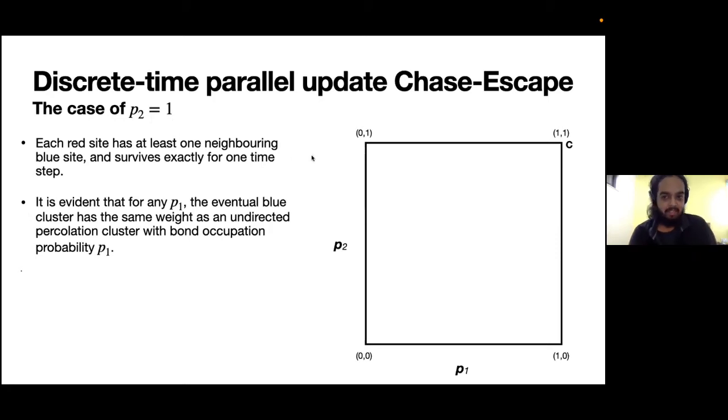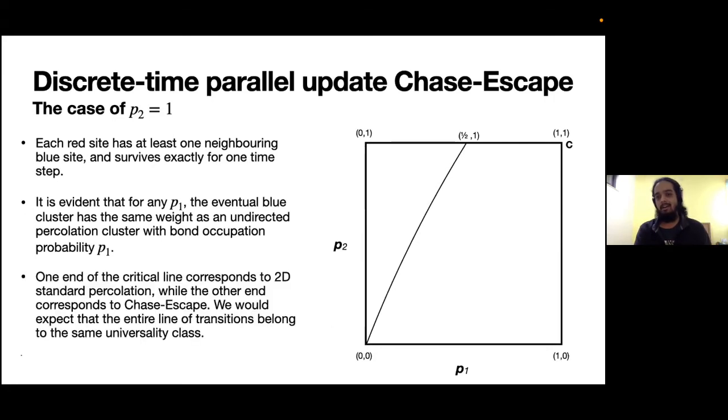This allows us to see that for p2 equal to one, the critical probability for the prey to survive would be half, which is the bond percolation threshold. I denote that point here in this phase diagram. Similarly, for different values of p2 we will have different critical p1s and we will have a line of transitions. Chase-Escape lies towards the end of this line, and since we mapped this end of the line (1/2, 1) to the bond percolation transition, we would expect that this entire line would lie in the same universality class of 2D standard percolation.